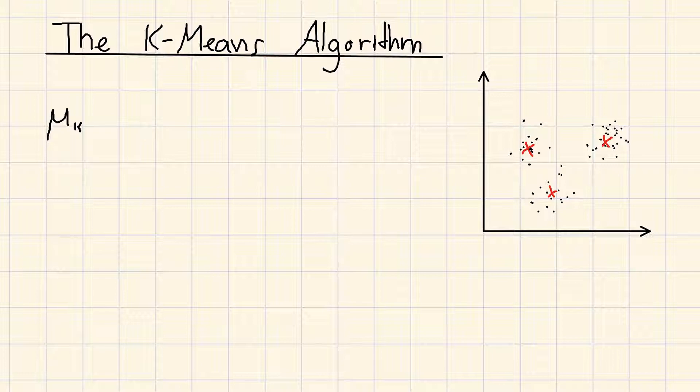Where k goes from 1 to capital K, in which µk is a prototype associated with the k-th cluster. As we see shortly, we can think of the µk as representing the centers of the clusters.